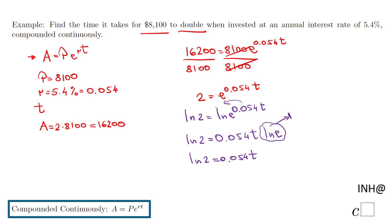What else do we need to do to find t? I'm going to divide by 0.054 on both sides. This cancels out, so we have the exact answer for this problem: t equals natural log of 2 over 0.054.